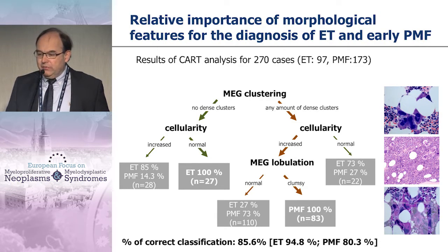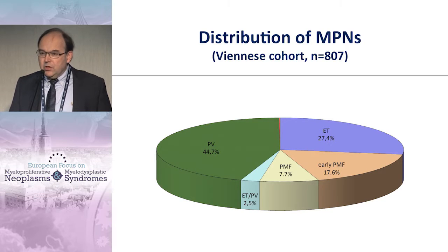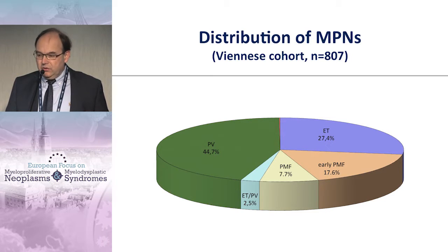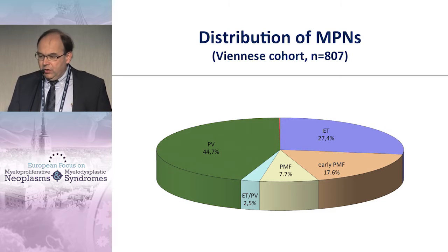According to these morphologic criteria, there is a decision tool for the pathologist — using megakaryocyte clustering, cellularity, and megakaryocyte lobulation — to more easily distinguish between WHO essential thrombocythemia and pre-fibrotic myelofibrosis.